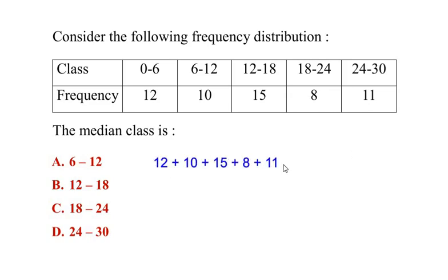By adding all the frequencies we get a total frequency of 56. Next, to find the median class we have to divide the frequency we have got by 2 because it is at the median, at the middle. So 56 divided by 2 gives us a value of 28.